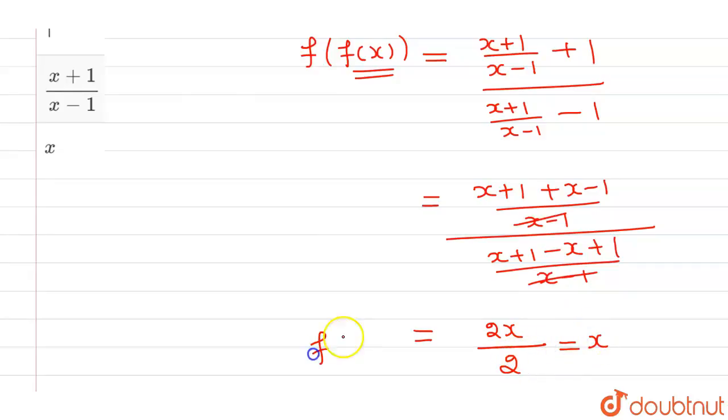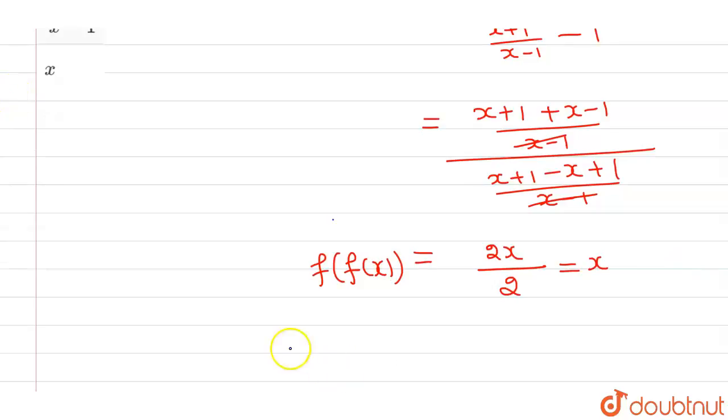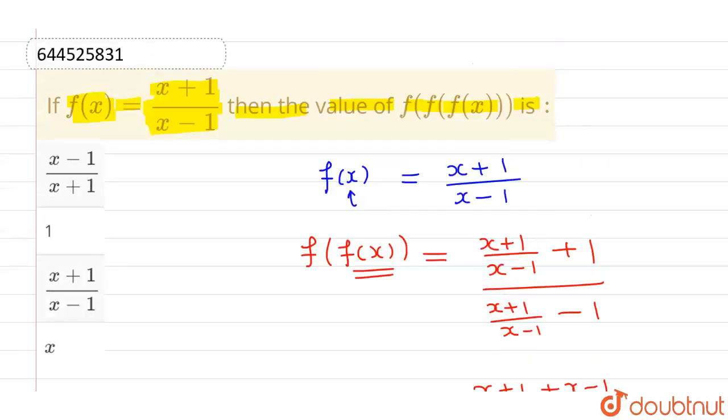So f of f of x is nothing but x. Now we need to find out f of f of f of x. So f of f of f of x will be equal to, now in this particular case, this is the independent variable, so at place of x,